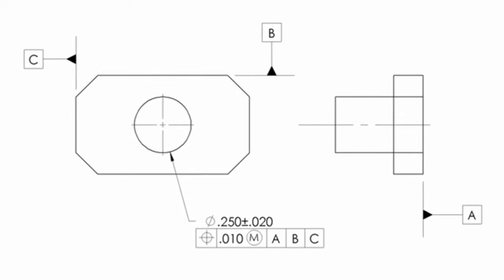Let's move on to virtual condition on an external feature for max material condition. We have the same type of part, only now it's an external feature instead of an internal feature, and we're still using the MMC modifier.